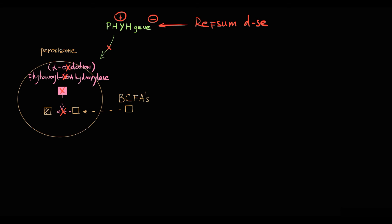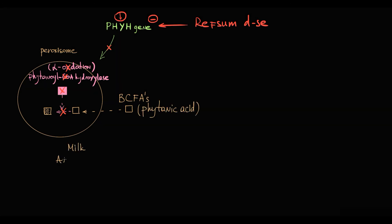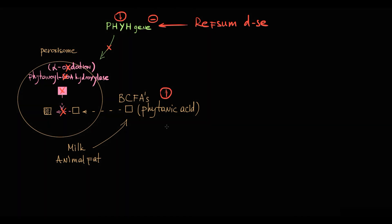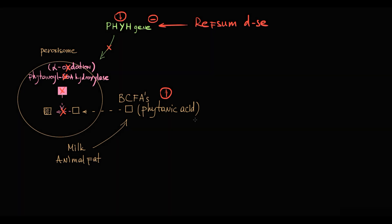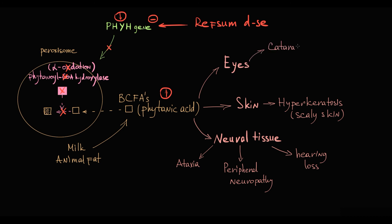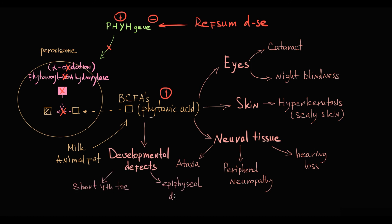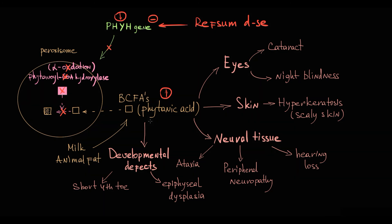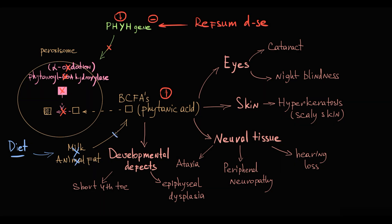The most common branched-chain fatty acid is phytanic acid, found in milk and animal fat. Without alpha-oxidation, phytanic acid cannot be metabolized to pristanic acid, so phytanic acid accumulates in tissues. Accumulation causes damage to neural tissue resulting in ataxia, peripheral neuropathy, and hearing loss. It also affects the skin, causing hyperkeratosis manifesting as scaly skin, and affects the eyes, causing cataracts and night blindness. Developmental defects include shortening of the fourth toe and epiphyseal dysplasia.